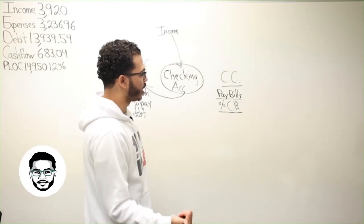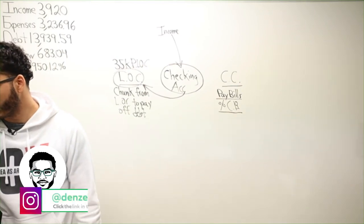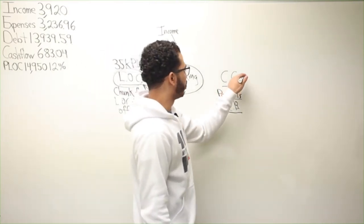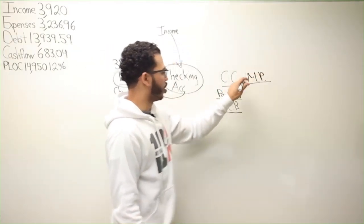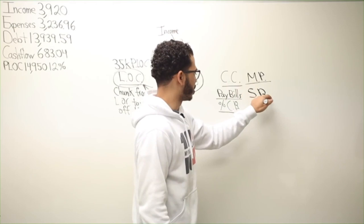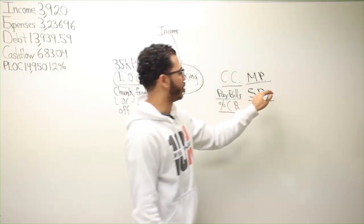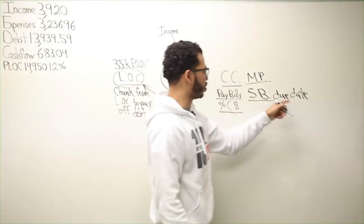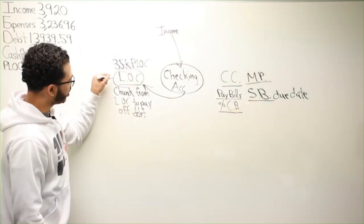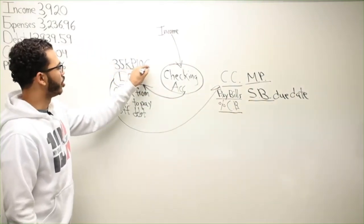What you were getting into was setting up the automatic payment. Instead of paying the minimum payment on this credit card, you should be paying the statement balance each and every month in full on its due date. On the due date of that credit card, you should pay the statement balance in full from here.